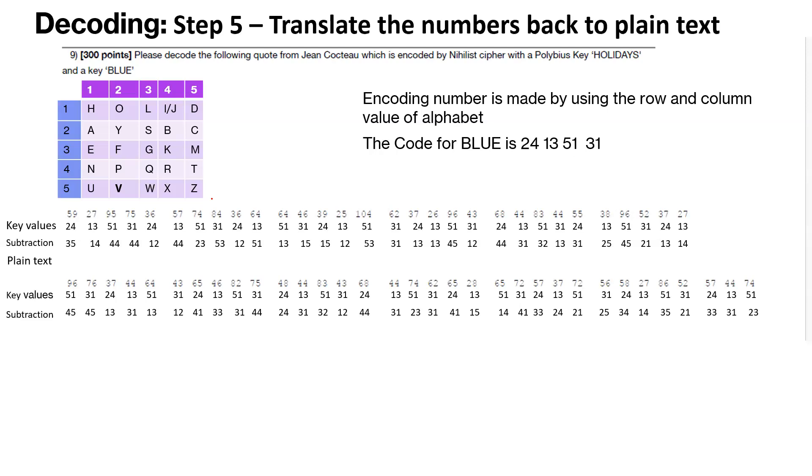We are going back and translating it. So we see the values 35. So 35 corresponds to third row and fifth column. So M is the value for the plain text value for 35. So we'll start writing M out here. Similarly, 14 is the second letter out here.